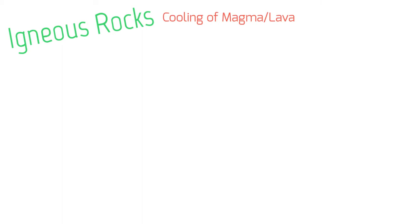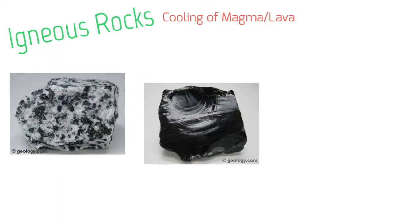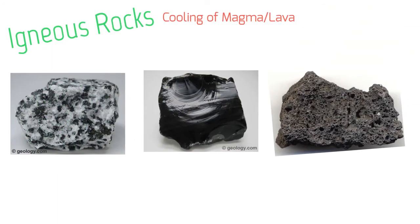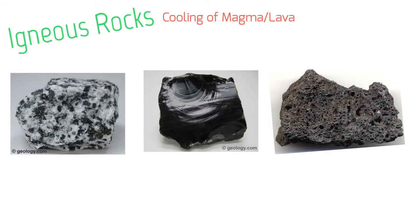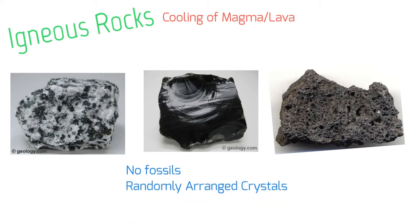Now that we know igneous rocks are formed through cooling of magma or lava, let's take a look at a few examples. Here are a few different types of igneous rock. They are a little different, but there are some characteristics they have in common. For one, they all came from magma and lava cooling down, whether inside or outside the earth. Another characteristic is they have no fossils — they're too hot; they would have melted any remains needed to create a fossil.